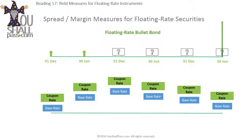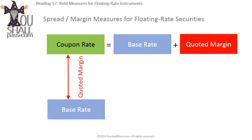Floating rate coupons don't float around at random. They are fixed in relation to some other rate called the base rate, so as the base rate varies, so does the coupon rate for the floating rate security. When a floating rate bond is issued, the issuer tells you what the base rate is going to be and what the quoted margin is going to be. The base rate plus the quoted margin make up the coupon rate.